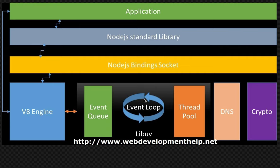On top of the C++ libuv layer, we have bindings and sockets, then there are the Node.js standard libraries. Above that, we have fs, http, and other modules — these are the Node.js core libraries.